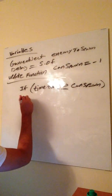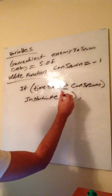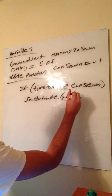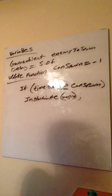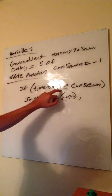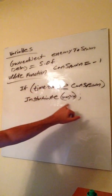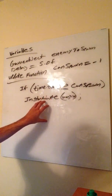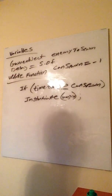So: if Time.time is greater than or equal to canSpawn — which is negative 1 — then instantiate EnemyToSpawn. When the game starts, Time.time is 0. Is 0 greater than or equal to negative 1? True — so it instantiates and spawns an enemy. But now this if statement is going to be run through every update, and it's still going to be true, because we don't have our delay variable in there. This variable stays negative 1 while Time.time keeps increasing. So we need canSpawn to update to a new value every time this is true.